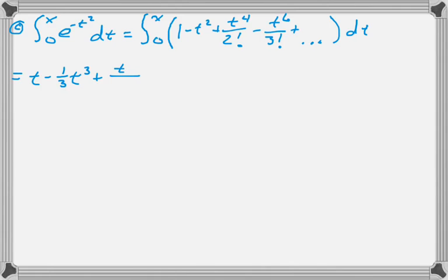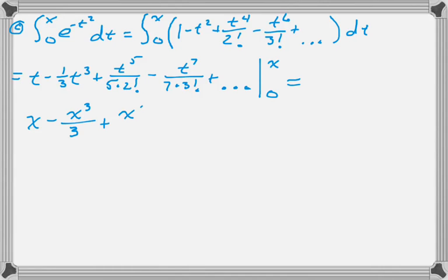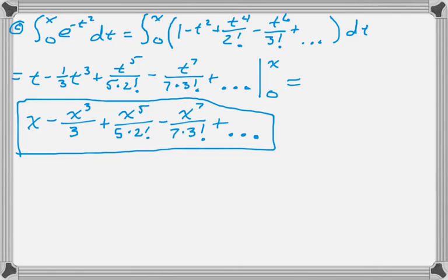So everything here is still t's. And dot dot dot. Now I'm going to evaluate it from 0 to x. When I plug in 0, everything goes away. So really I'm just evaluating it at x, which is just kind of like a change of variable. Change in the way it's spelled, I guess. To get this, plus dot dot dot. So that's my answer to that part.